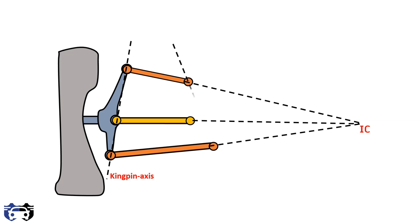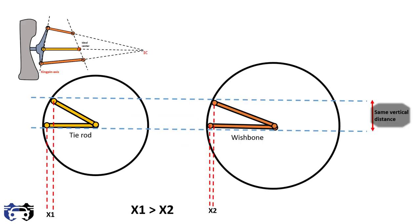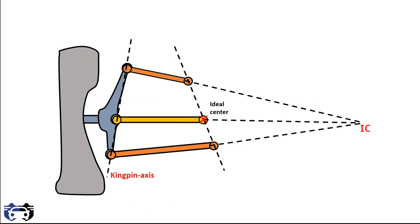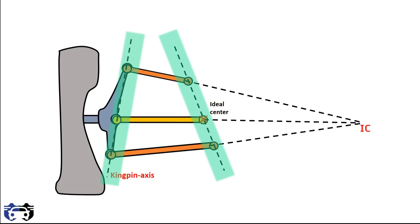The intersection of the axis passing through the inner joint of the upper and lower wishbones with the imaginary line of the tie rod gives the ideal center. This is the point up to which the tie rod should be extended to minimize bump steer or roll steer. To cover the same vertical displacement at time of bump or rolling, the tie rod covers more horizontal distance because of its short length. Therefore, the length of the tie rod should fall between the kingpin axis and the ideal center at a particular instant.